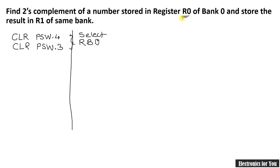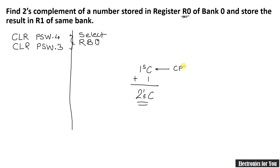Next we have to get the number from R0. To find the two's complement, first we need to find the one's complement, and once the one's complement is found we add one to get the two's complement. The only instruction available to find the one's complement is CPL, which complements the accumulator. So we use the MOV instruction: MOV A, R0 — this loads the content of register R0 into the accumulator.